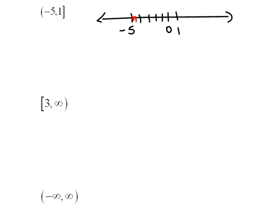Now we're talking about all of the things between those two places where the parenthesis tells us that that endpoint is not included, the bracket tells us that that endpoint is included.